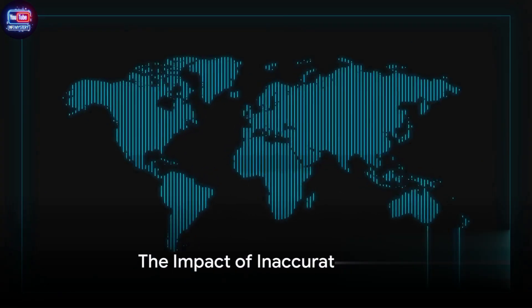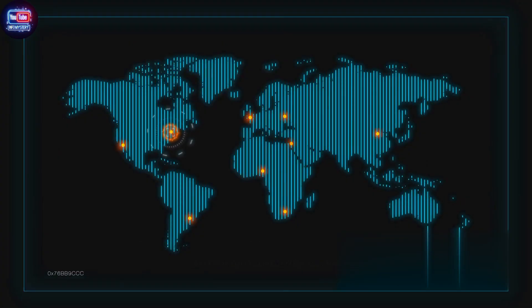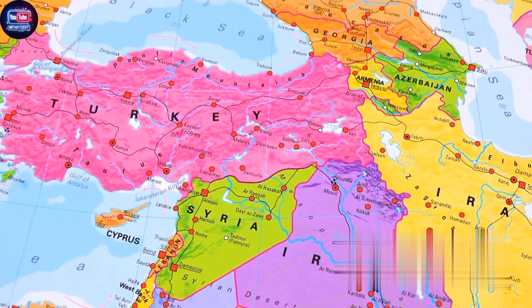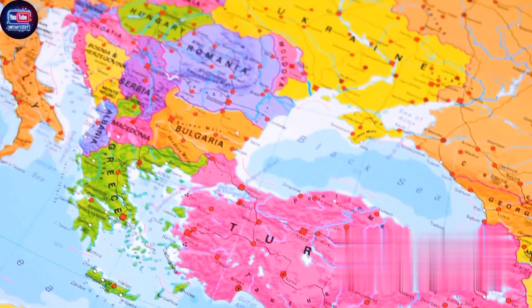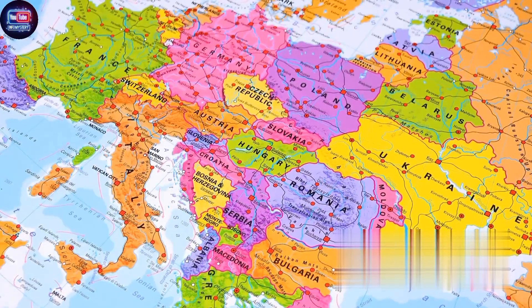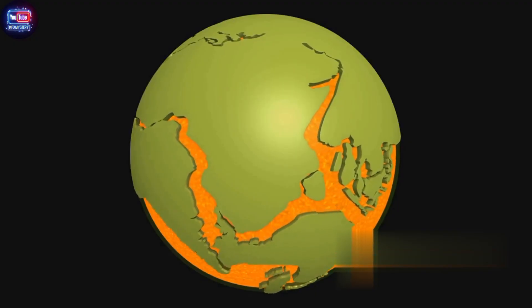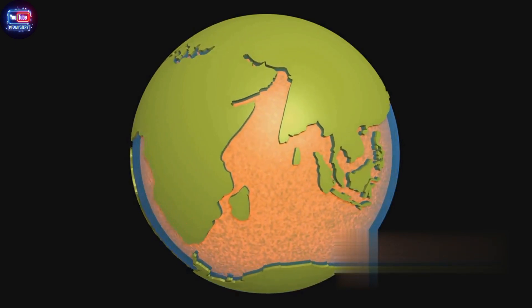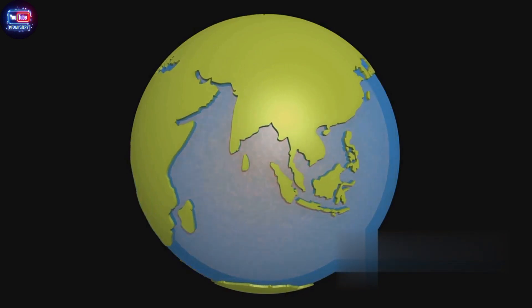Why does it matter if our world map is off? Inaccurate maps can significantly skew our understanding of geography. When we look at a distorted map, we're not seeing the true size, shape, or location of continents and countries. Africa is often depicted as being the same size as Greenland, when in reality it's about 14 times larger. This can lead to misconceptions and misunderstandings about the world we live in, which can impact everything from education to policy decisions.